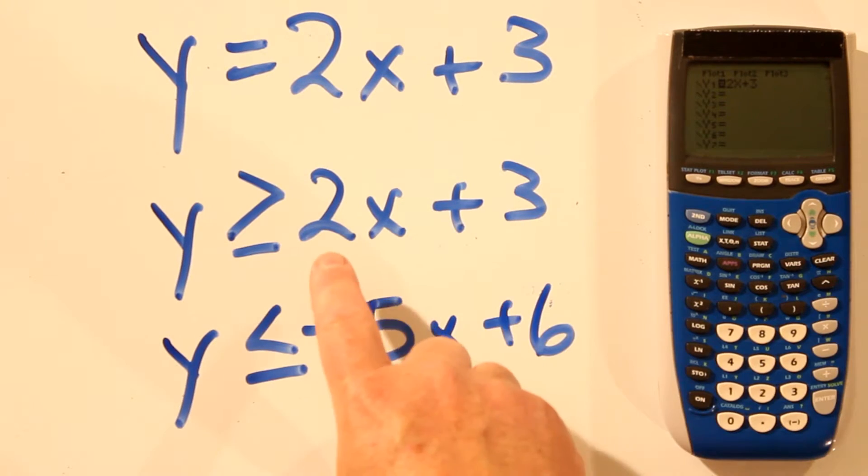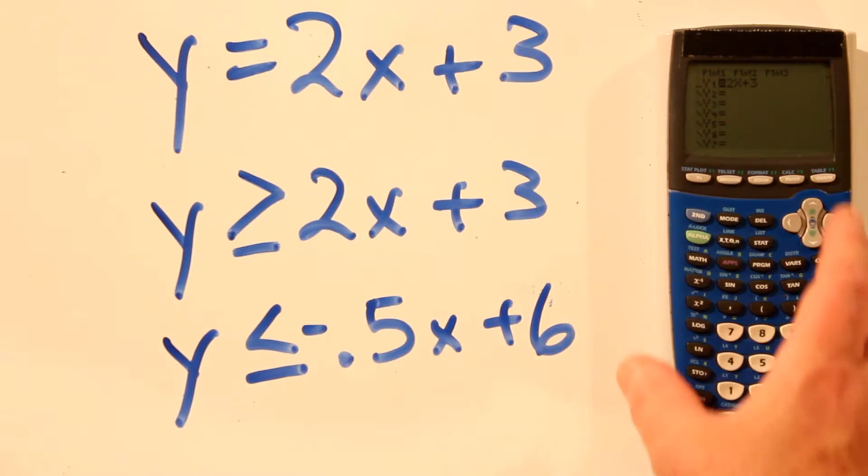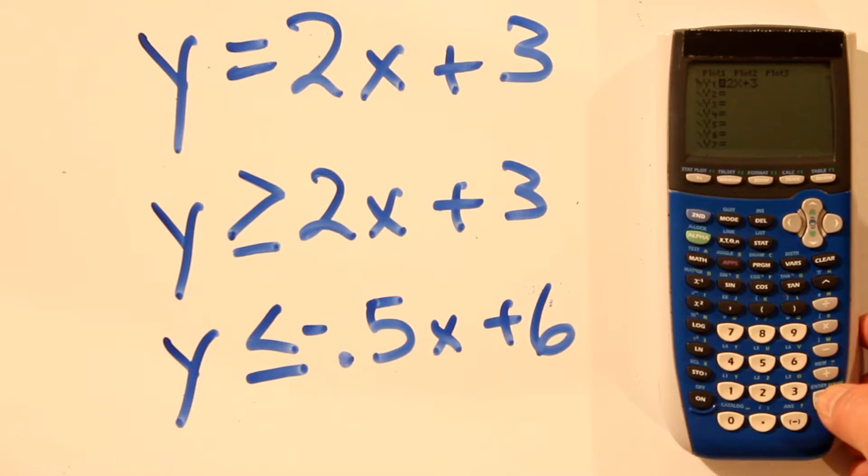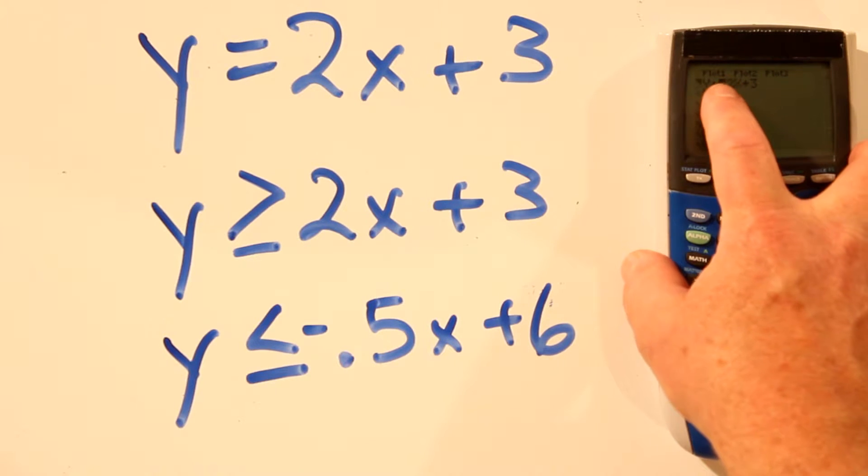So let's graph these two lines, y greater than 2x plus 3. We already have 2x plus 3 typed in there. We'll hit enter, enter. And now we're on the greater than equal to function.